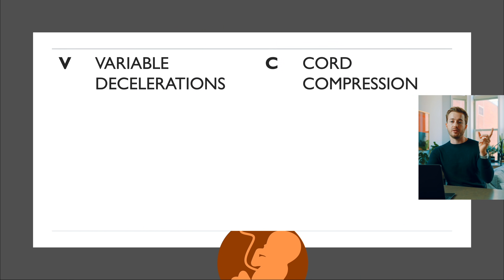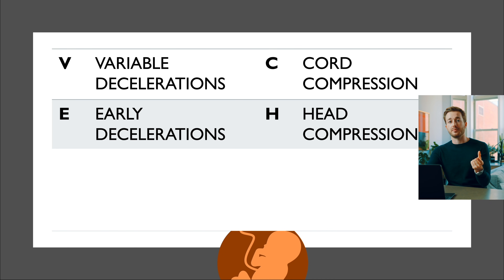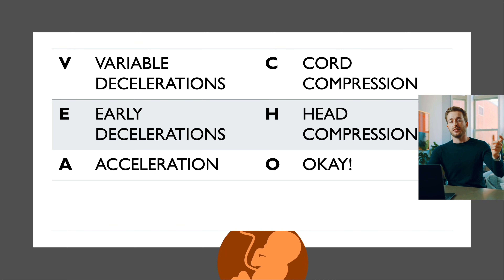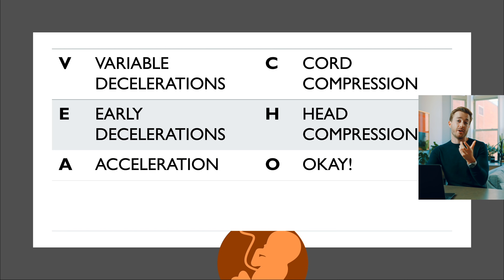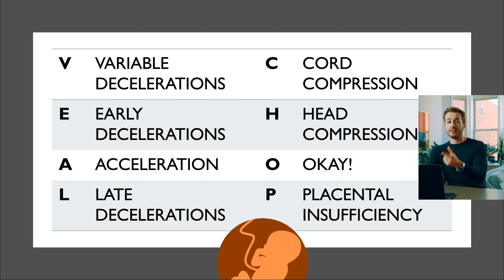A mnemonic I used a lot during my OB-GYN rotation is VEAL CHOP. V is variable decelerations — caused by cord compression; E is early decelerations — caused by head compression (the other side H); A is accelerations — and on the other side, O is OK; L is late decelerations — and on the other side, P is placental insufficiency.